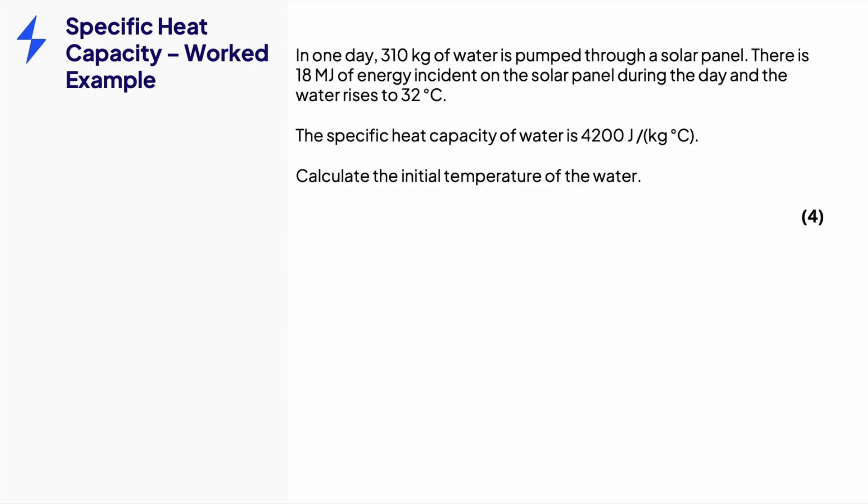Let's go through an example of using the specific heat capacity equation. In one day, 310 kilograms of water is pumped through a solar panel. There is 18 megajoules of energy incident on the solar panel during the day and the water rises to 32 degrees C. The specific heat capacity of water is 4200 joules per kilogram per degree C. Calculate the initial temperature of the water for four marks.